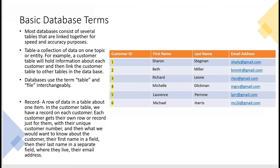Most databases consist of several tables linked together for speed and accuracy. The biggest advantage of a relational database is the speed and accuracy with which you can access data. A table is a collection of data on one topic or entity — for example, a customer table holds information about each customer. Note that databases use the terms 'table' and 'file' interchangeably, so the customer table is also the customer file.